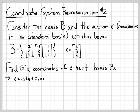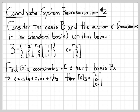I need to be able to write x as some number c1 times the first column, plus some other number c2 times the second column, plus a final unknown number c3 times the third column. If we can find these numbers c1, c2, and c3, then the vector x sub b will simply be c1, c2, and c3. By definition, these are the coordinates of x written with respect to the basis b. So the problem boils down to: can I find c1, c2, and c3 to write x as a linear combination of these three vectors?